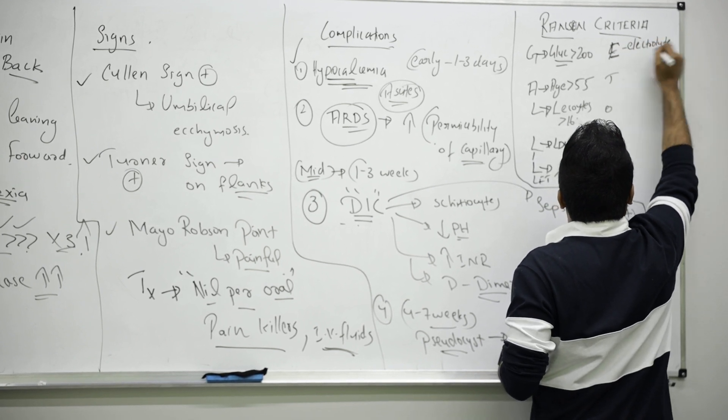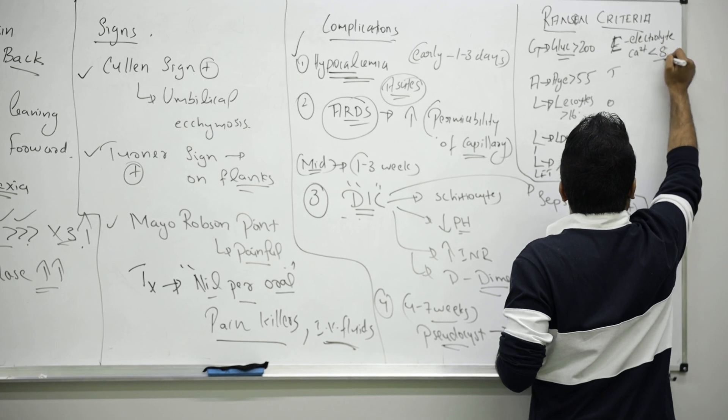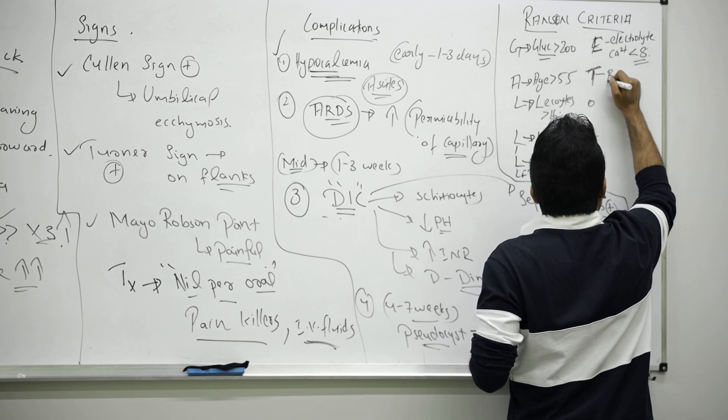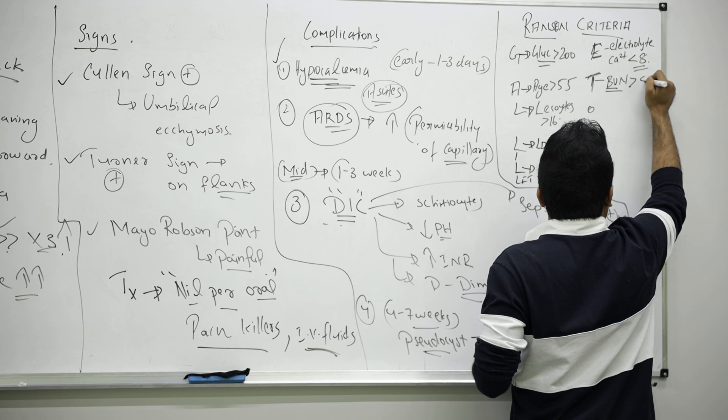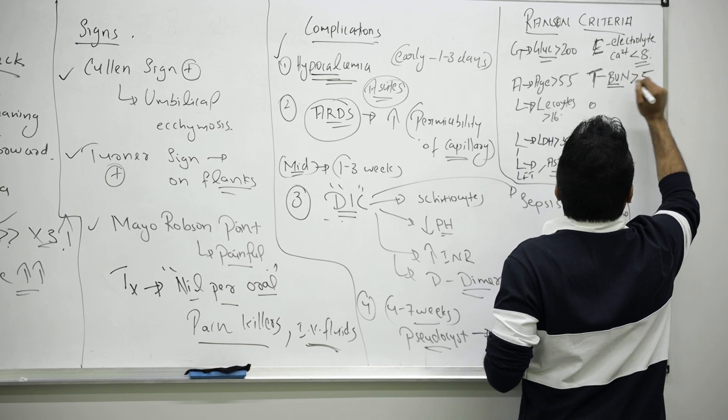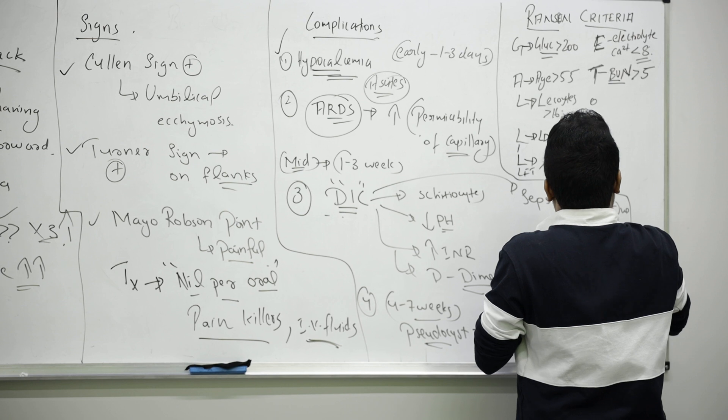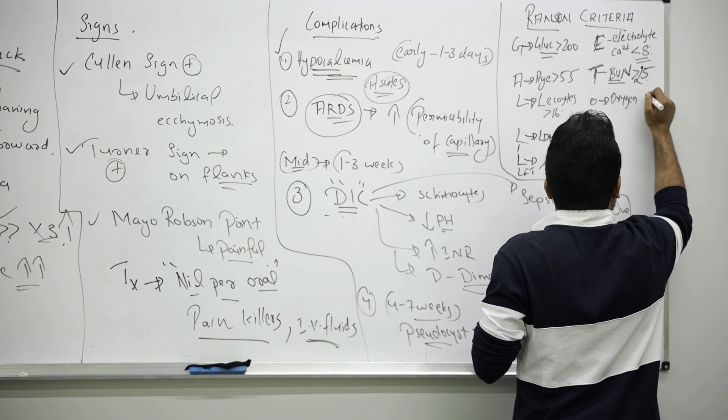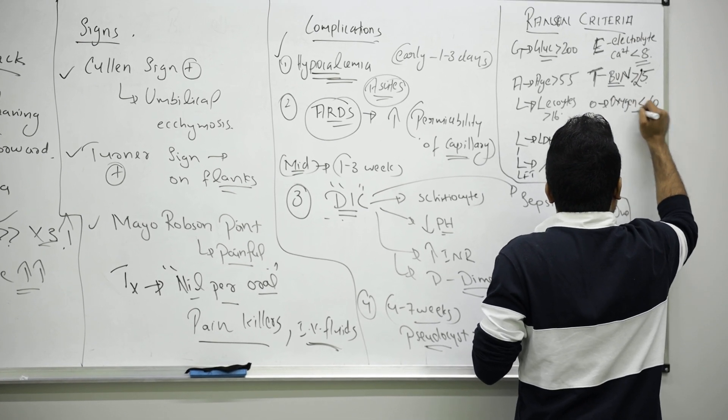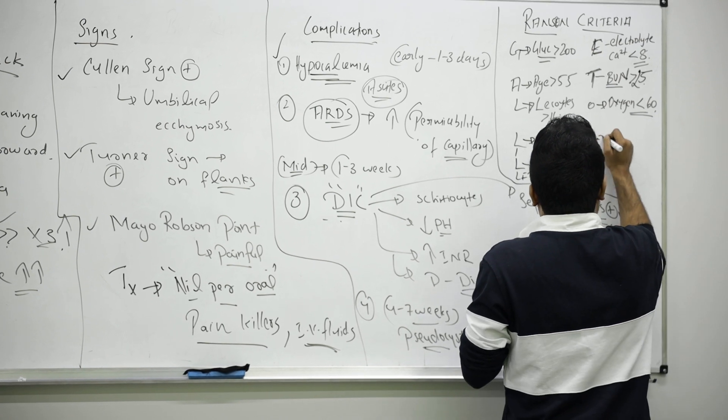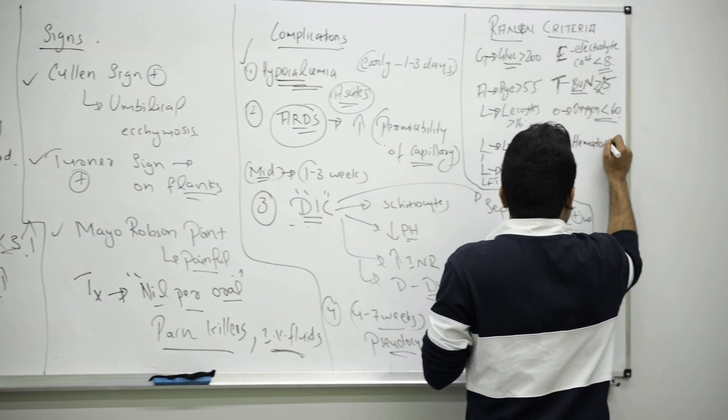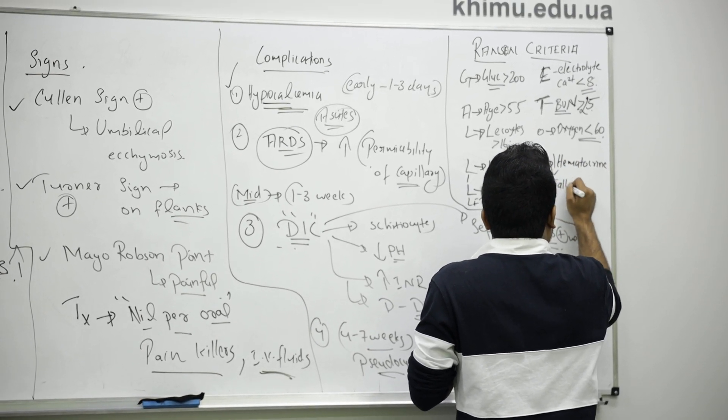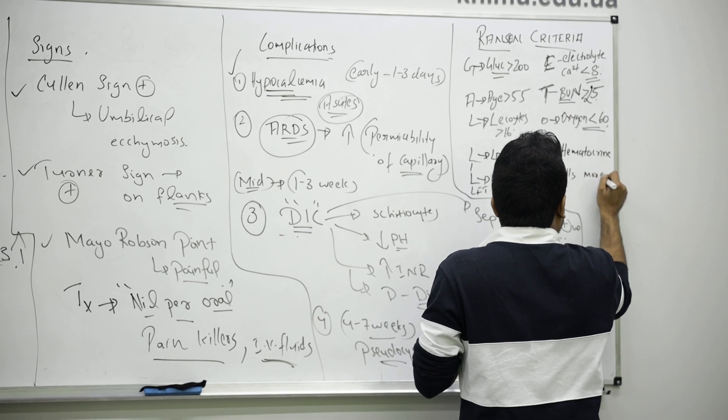T for kidney function, blood urea nitrogen, it is more than 25. O for oxygen less than 60, oxygen saturation. H for hematocrit, decreased hematocrit or there is a fall more than 10 percentage.